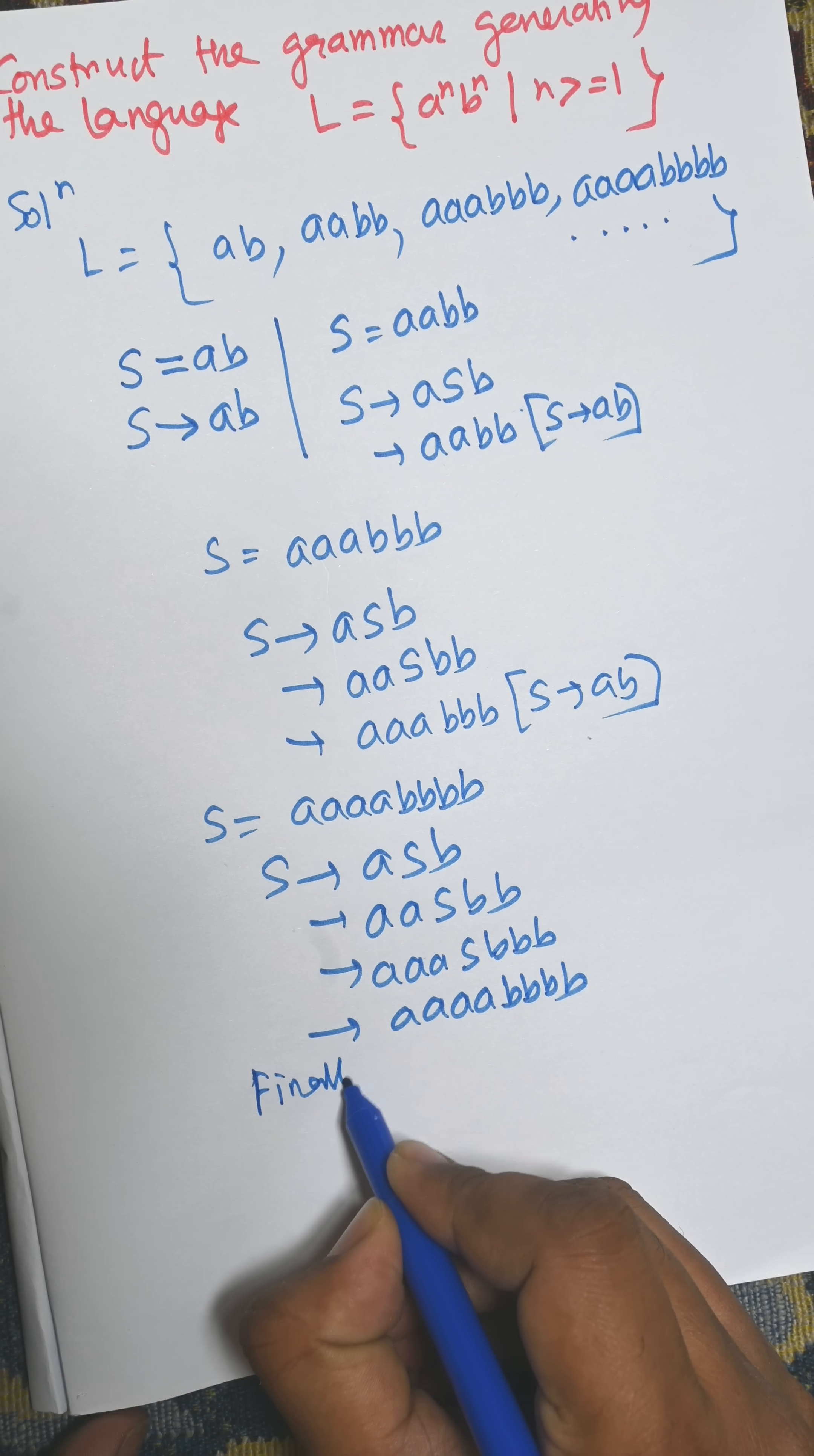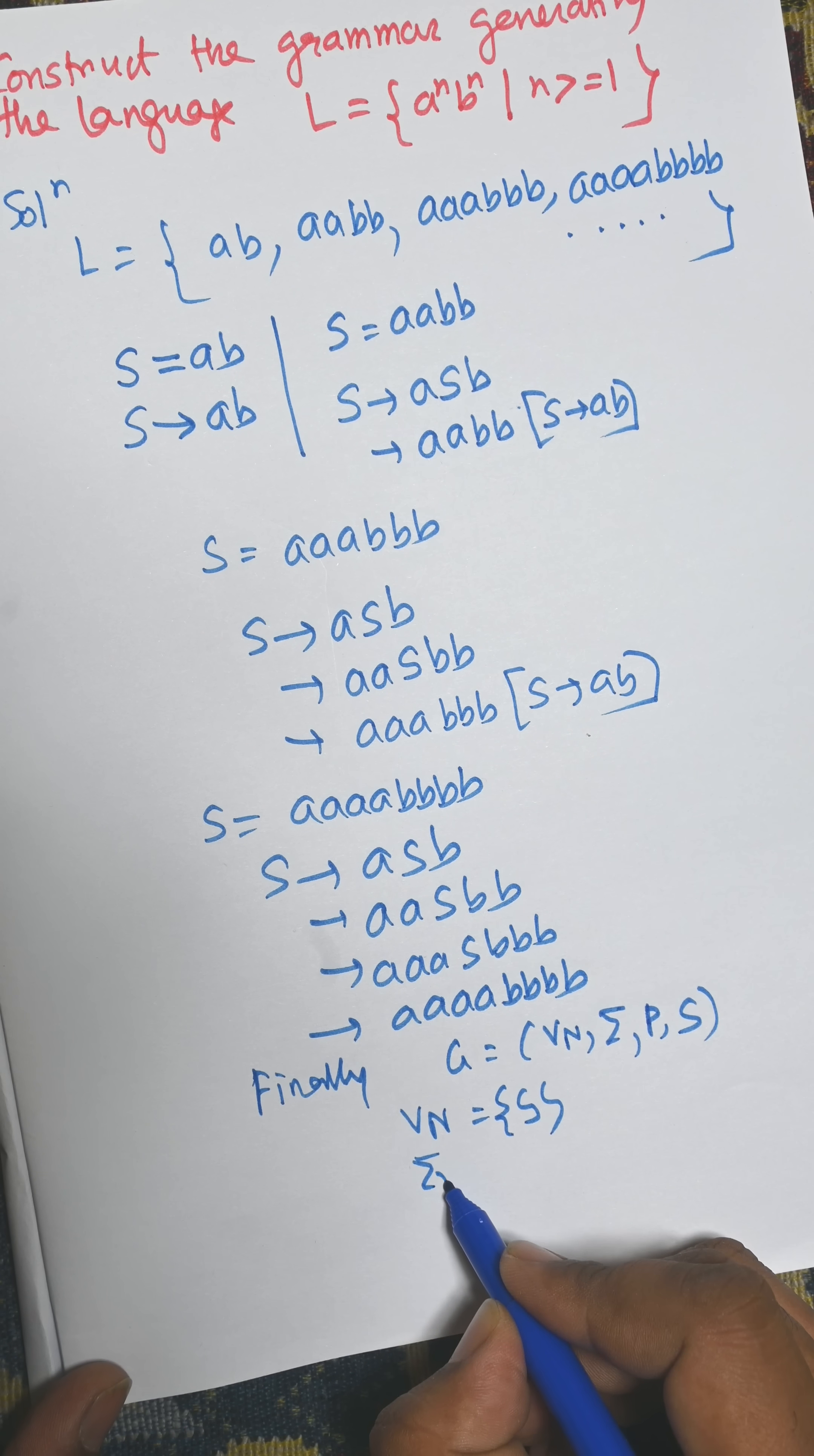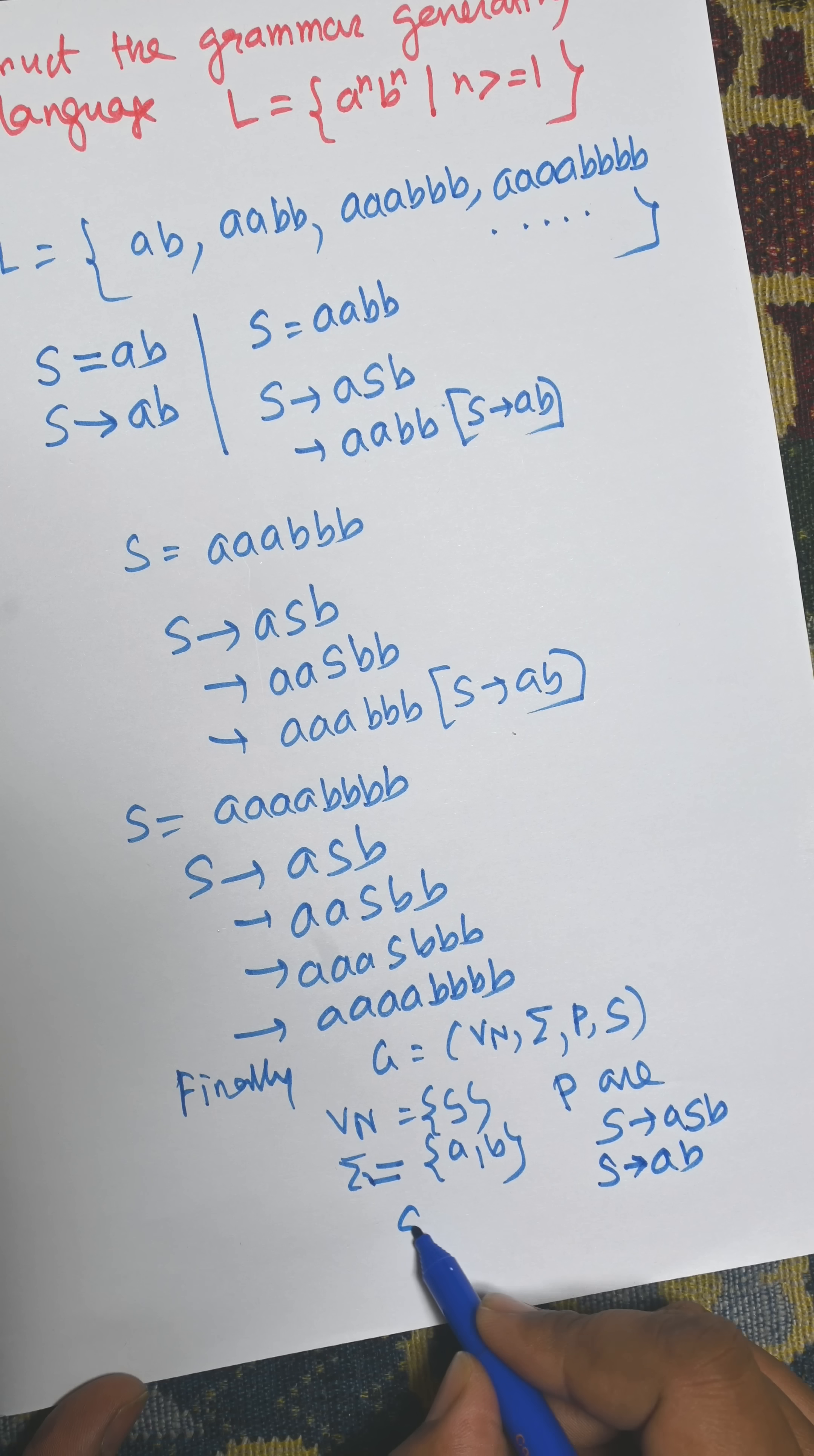The grammar G equals (VN, Σ, P, S), where VN is the set of variables, Σ is the alphabet, P is the production rules, and S is the start symbol. VN equals {S}, Σ equals {A, B}, P includes S goes to ASB or S goes to AB, and S is the start symbol.